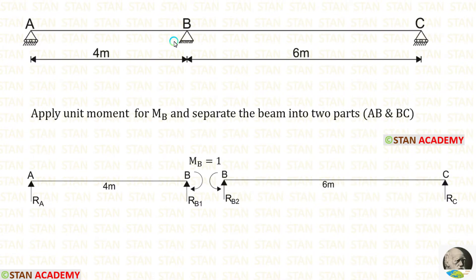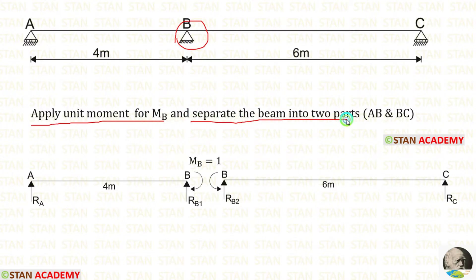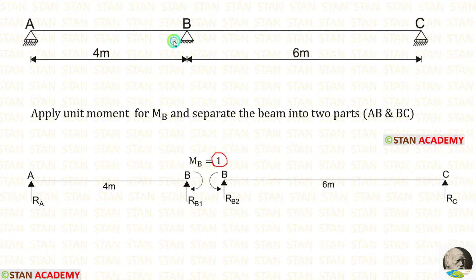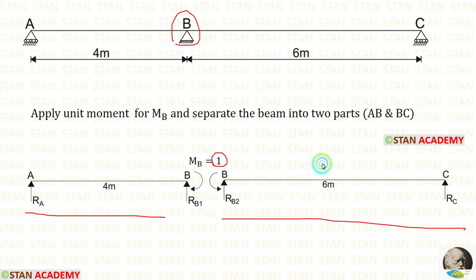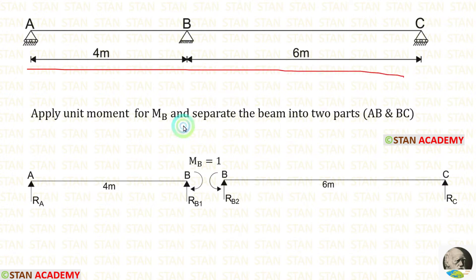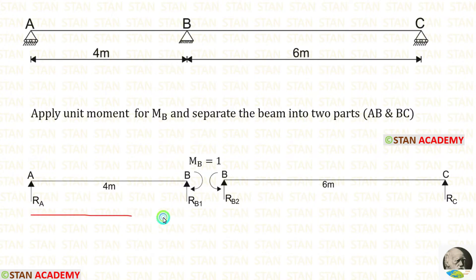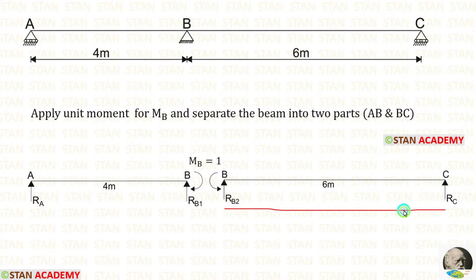To make the influence line diagram for the support moment at B, we have to apply unit moment for MB and then separate the beam into two parts. I have applied unit moment for MB and split the beam at point B into two parts AB and BC. This continuous beam is split into two separate simply supported beams. For beam AB, the unit moment is acting in the clockwise direction. For beam BC, the unit moment is acting in the anticlockwise direction.